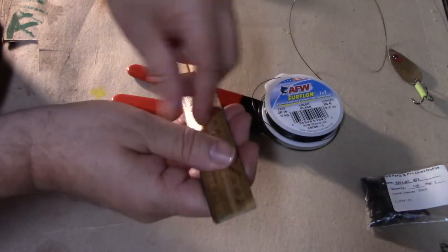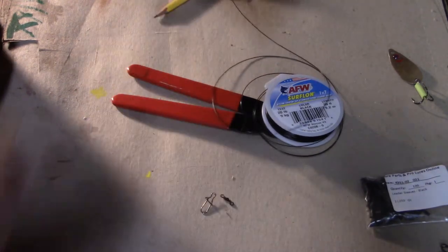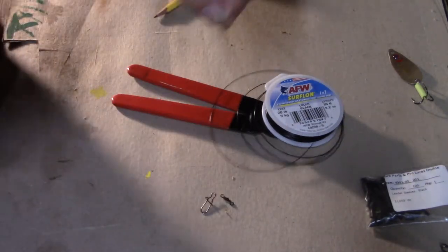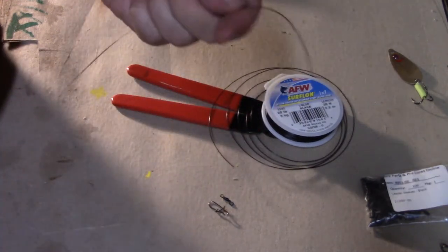Now all you got to do to make these—I just measure this out roughly, doesn't have to be perfect, about 10 inches, and just cut it with some wire cutters. This is stranded wire, nylon coated, and it's black.